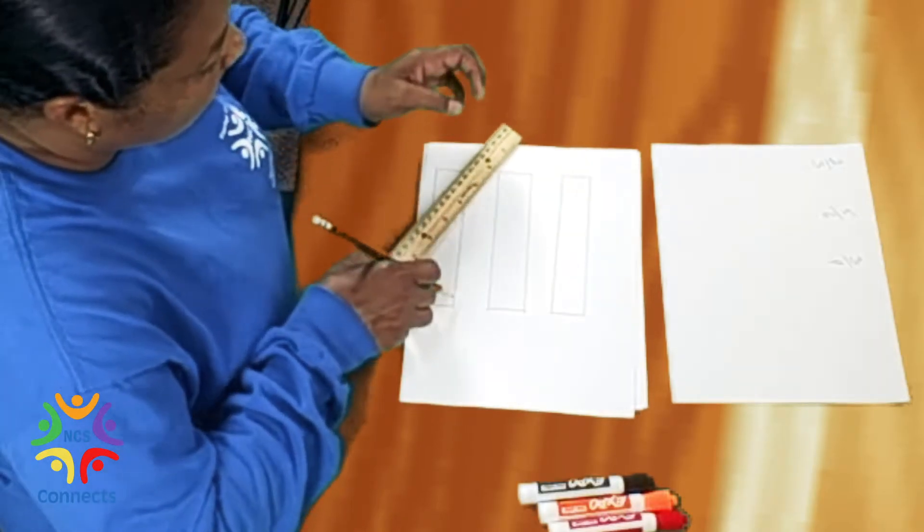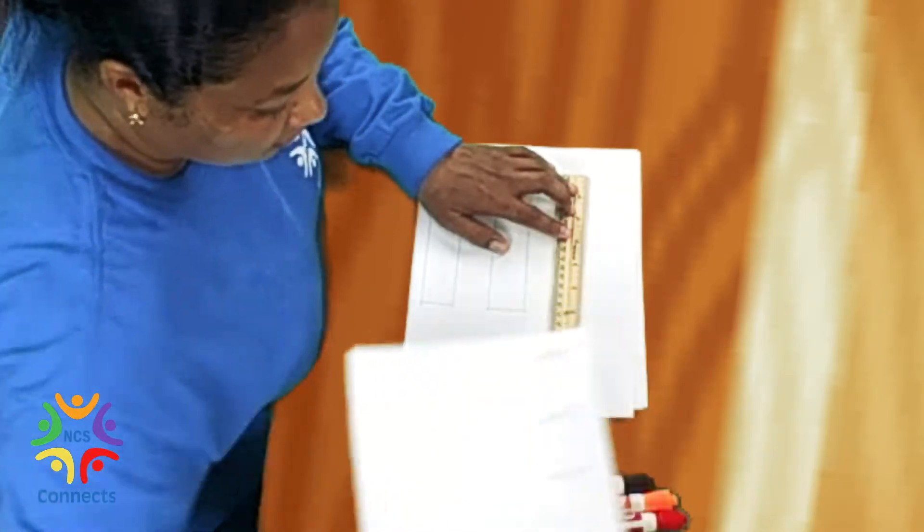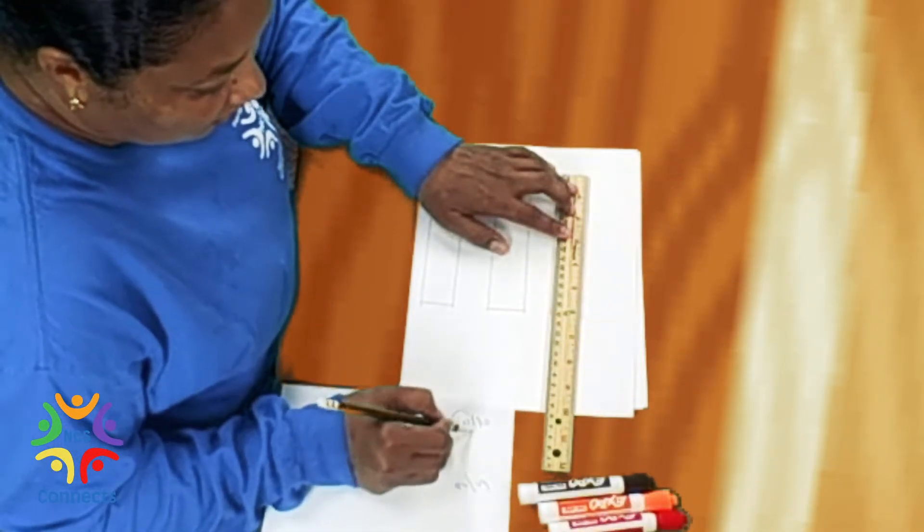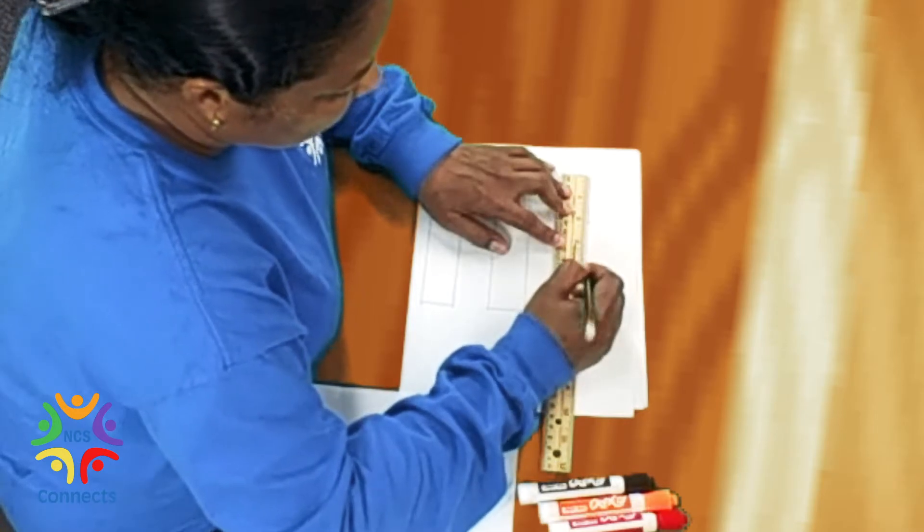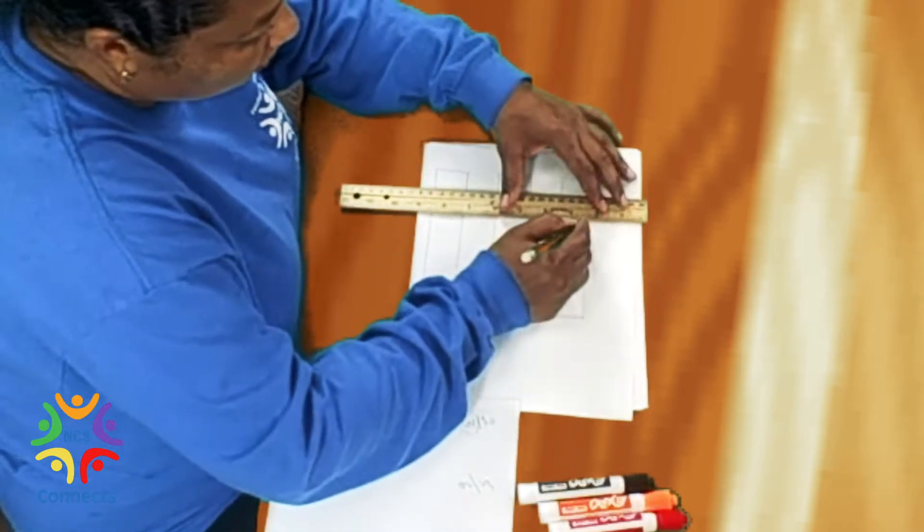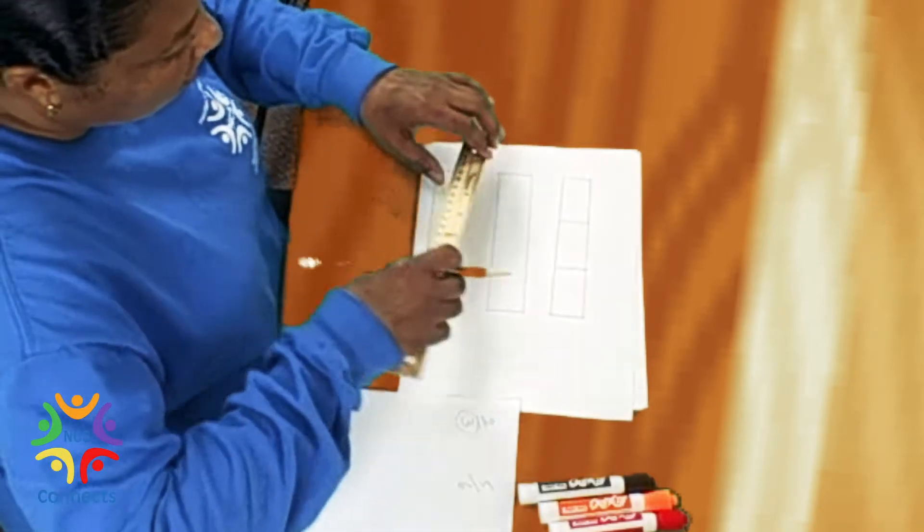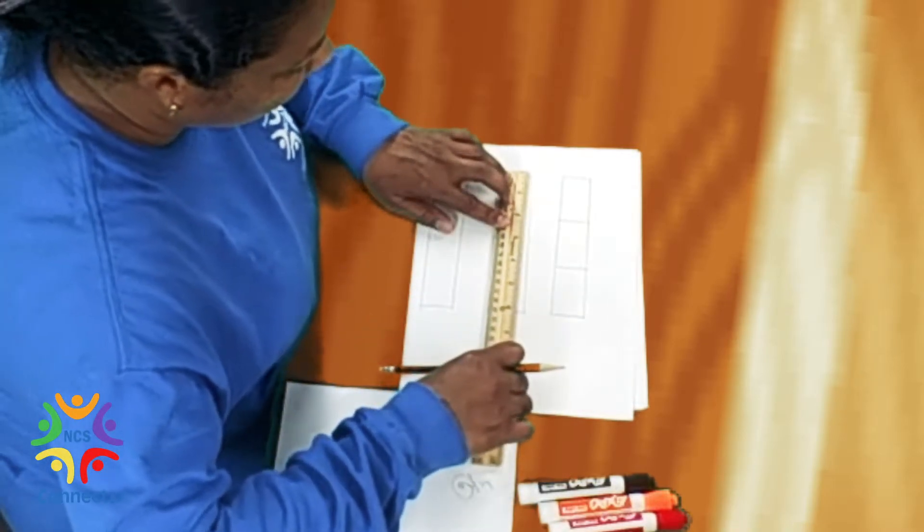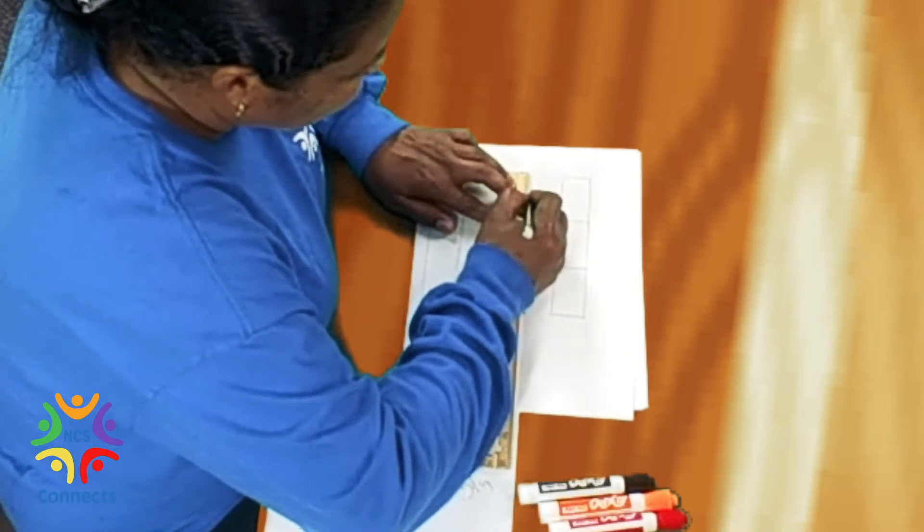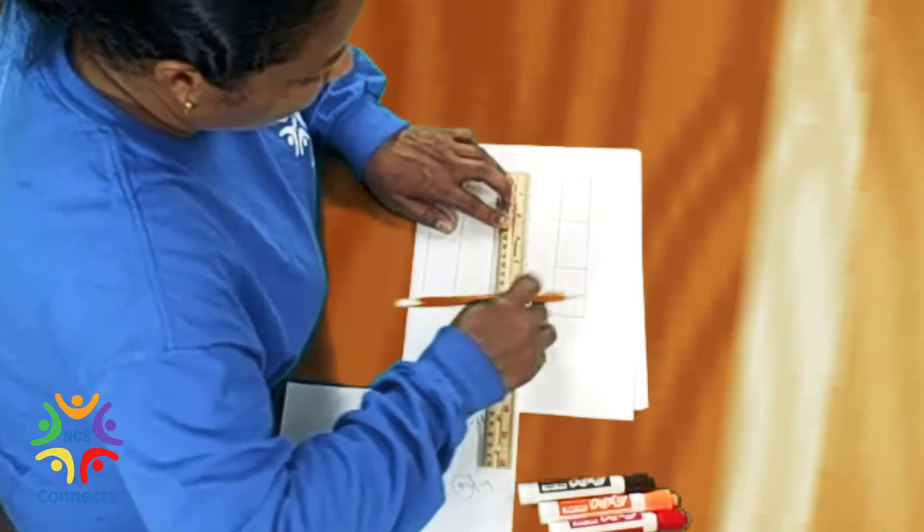Now we're gonna divide this into three because this is the two-thirds. And six divided by three is two, so each section will be two inches. And we're gonna look at the bottom and this one is six, so we're gonna divide this into six. And six divided by six is one. Each section will be one inch.